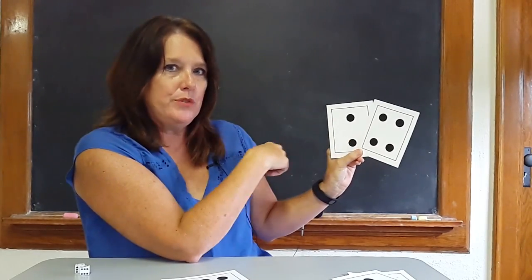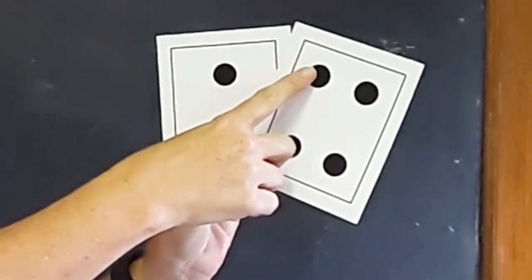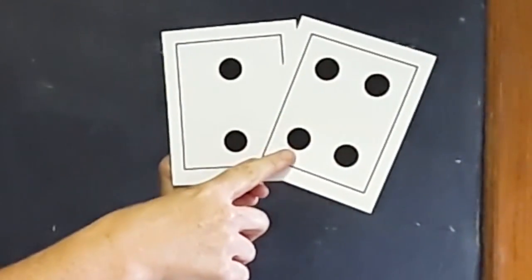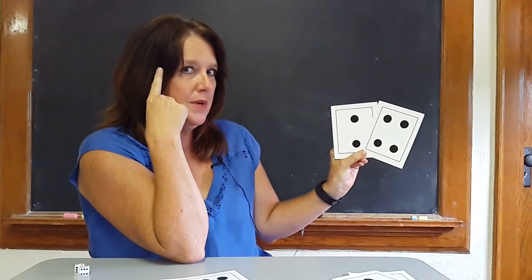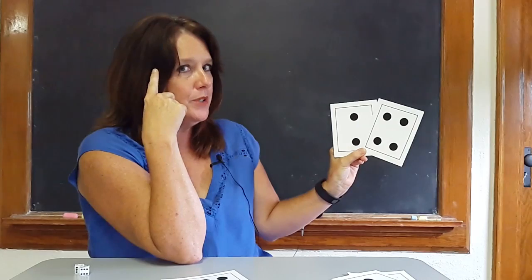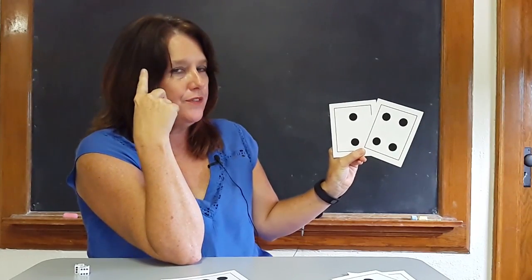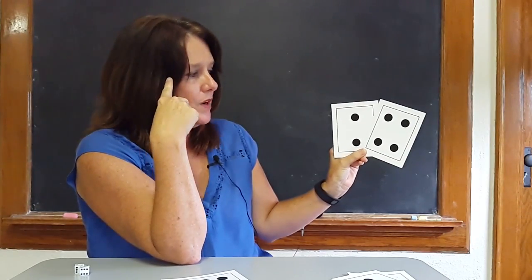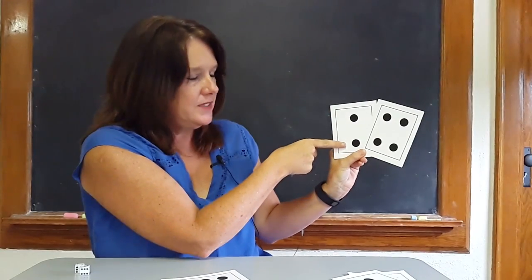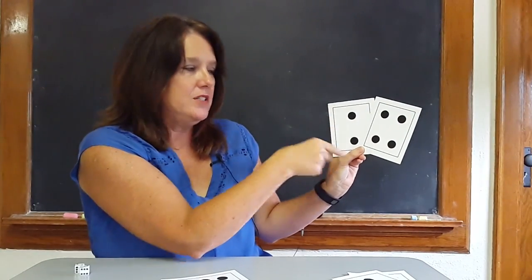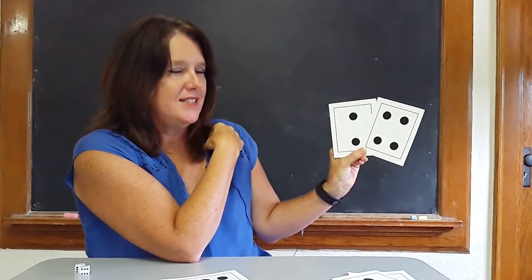Which card has the most dots? One, two, three, four. I'm going to put these dots in my head. Four. Remember, don't lose it. What's in your head? Four. And I'm going to start with four and count on: five, six. How many dots are on both cards, boys and girls? Six.